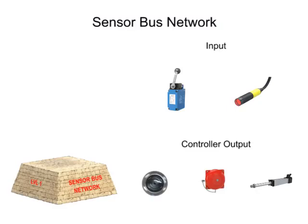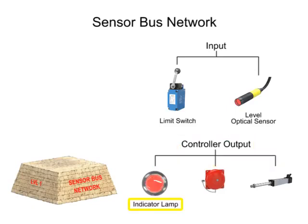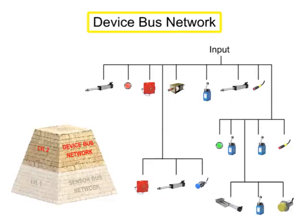multiple basic field devices like limit switches or optical level sensors are connected to one network cable. The sensorbus network is also capable of transmitting output signals from the controller over one cable to indicator lamps, alarms, or other actuator devices. The next increasingly complex level of industrial fieldbus networking is the devicebus network.